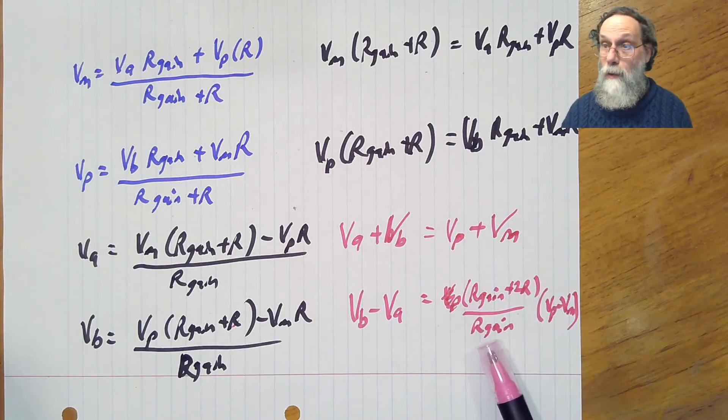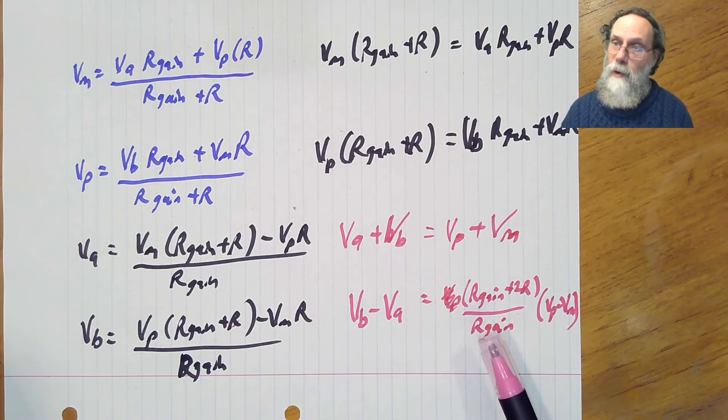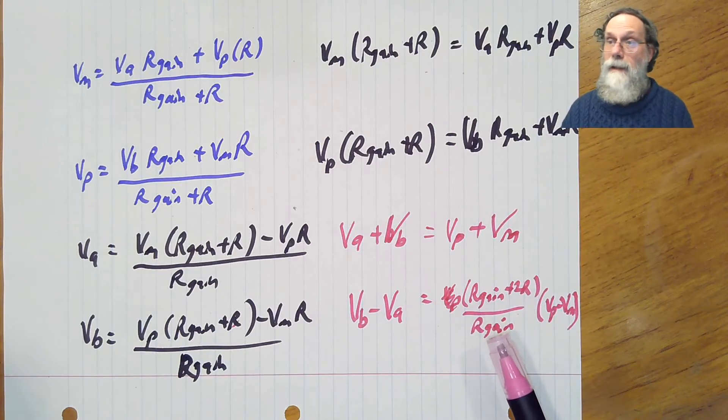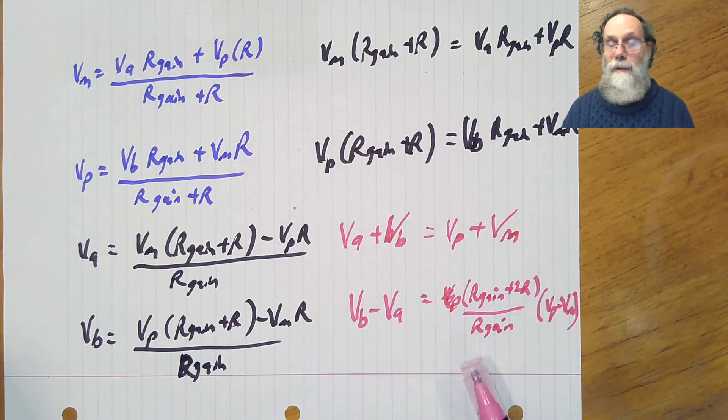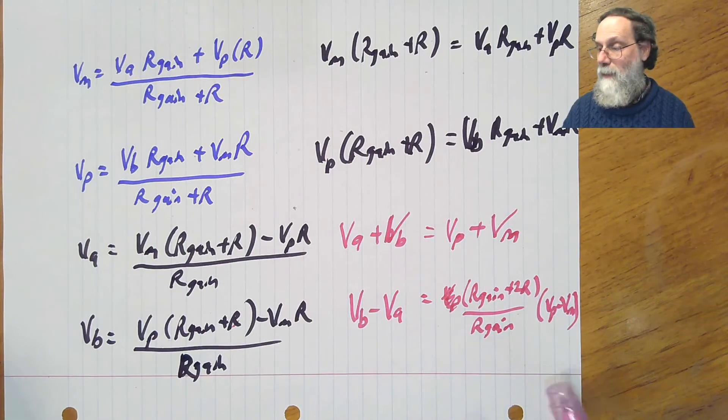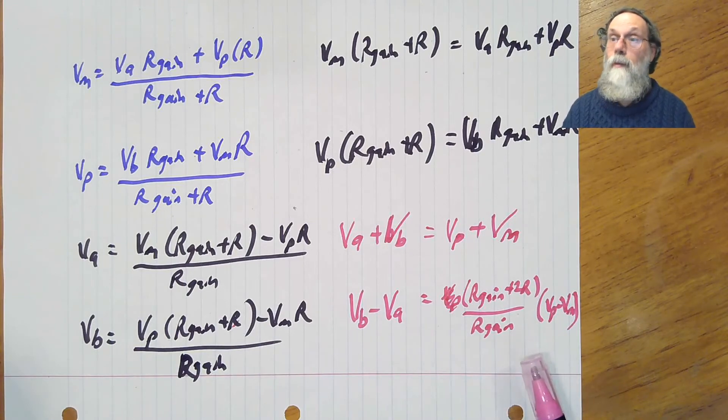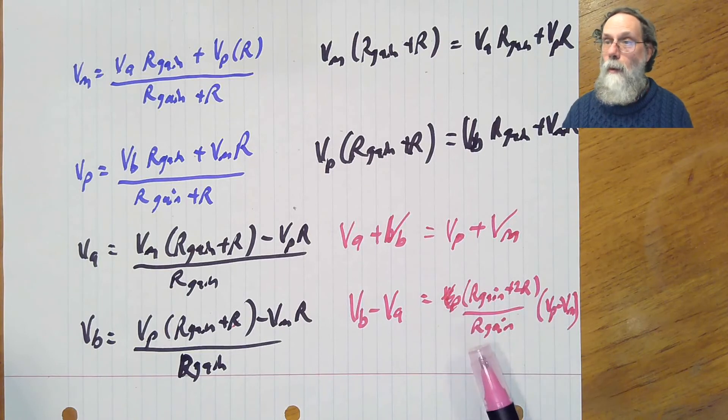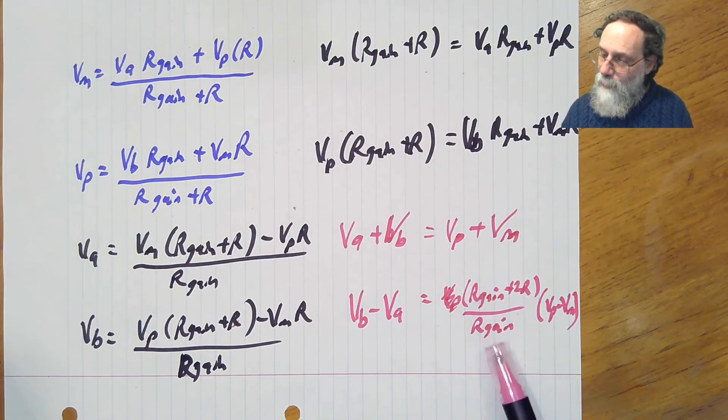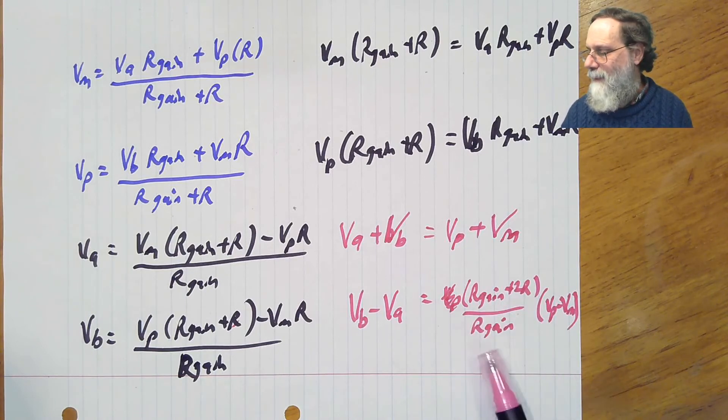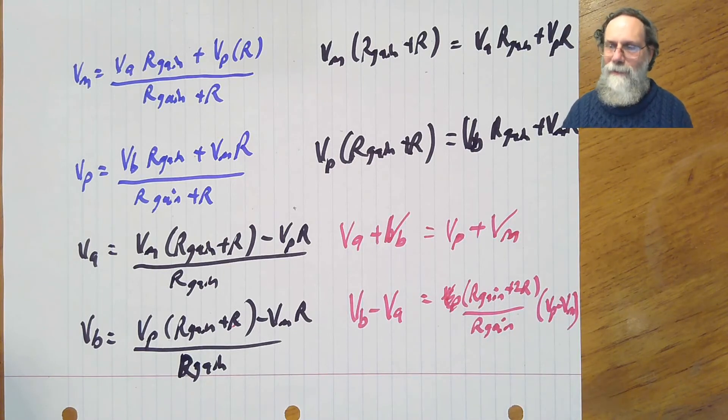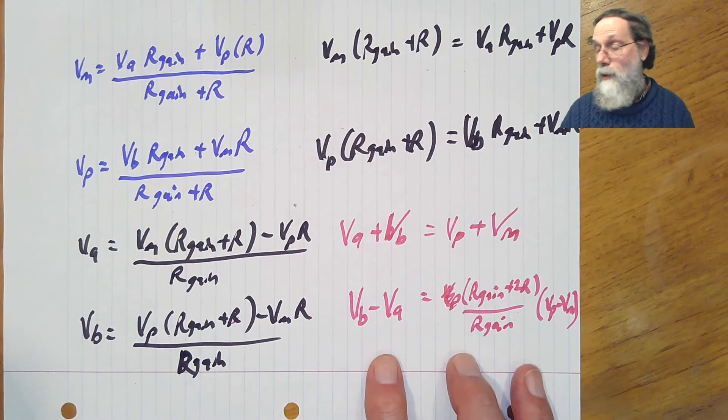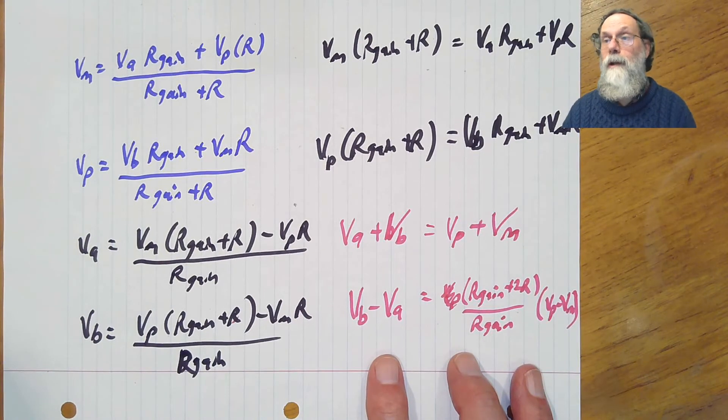And in fact, if we make R gain small, we can make this gain quite large. If we make R gain huge, then eventually this asymptotically becomes 1. And remember, that's what we would have gotten if we had not had an R gain resistor at all, if we just had an infinite resistor for R gain. The gain would have been two unity gain buffers. Vb would have been the same thing as Vp, and Va would have been the same thing as Vm. We would have had a gain of 1. So this is consistent with what would happen if we had a very large R gain.